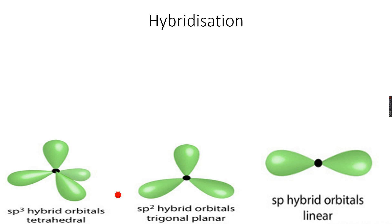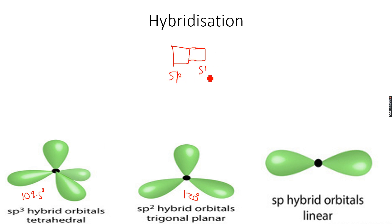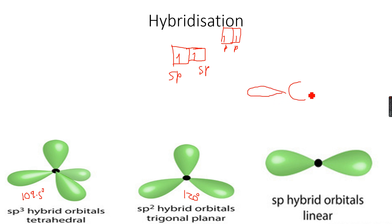Now let's talk about SP hybridization. SP hybridization has two SP hybridized orbitals and two P orbitals. The bond angles for SP are 180 degrees. Let's say we have two SP hybridized carbon atoms — the head-on overlap between them gives a sigma bond, and the head-on overlap with hydrogen also gives a sigma bond. So this will be sigma, this will be sigma, this will be sigma.